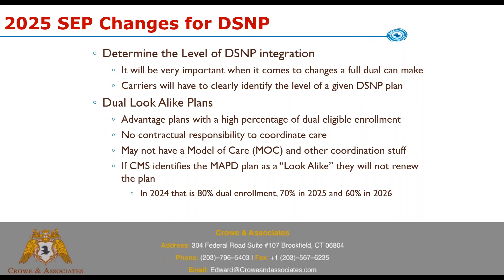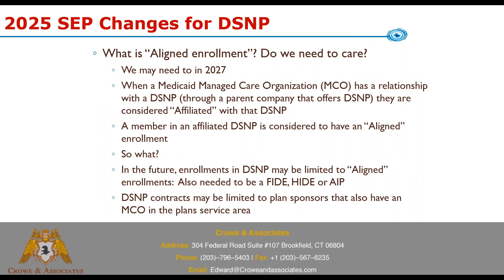A dual look-alike plan is basically an advantage plan with a high percentage of dual eligible enrollment. They have no contractual responsibility to coordinate care, no model of care, and don't meet the criteria to be considered an actual dual plan by CMS and the state — but they act like one. CMS is going to start identifying Medicare Advantage plans they consider look-alikes. In 2024, if a plan has 80% dual enrollment or more and doesn't meet the criteria, they'll be considered a look-alike. In 2025 that threshold drops to 70%, and in 2026 it drops to 60% — at which point CMS will not look to renew those contracts.